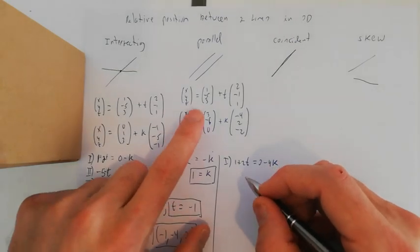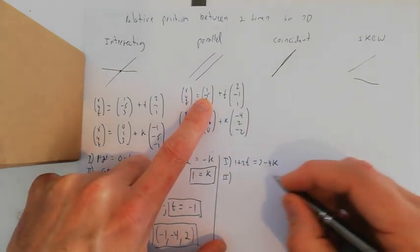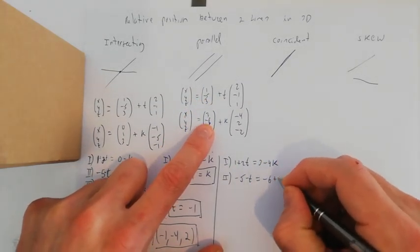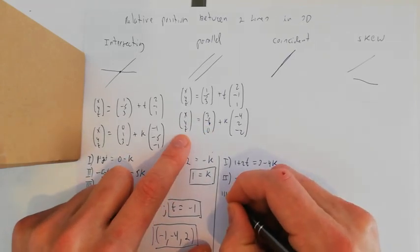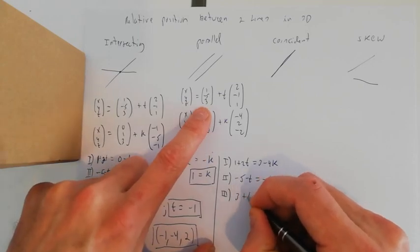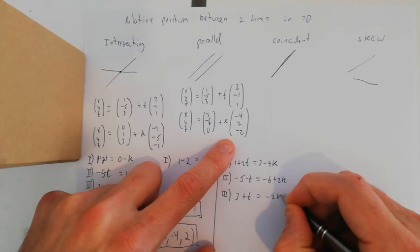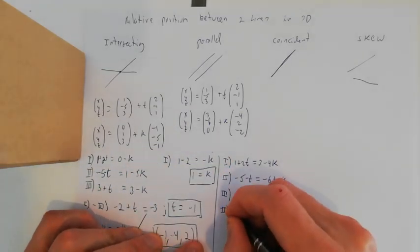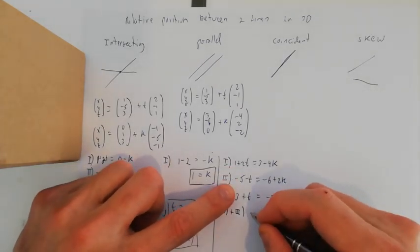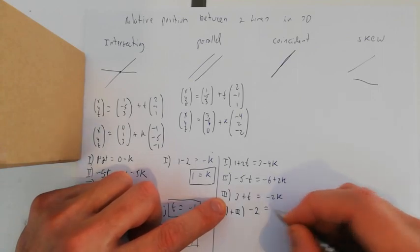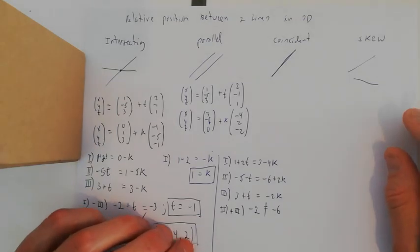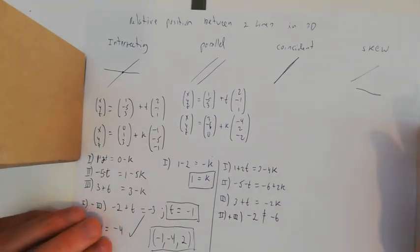Equation 2 is −5 − t = −6 + 2k, and equation 3 is −3 + t = 0 − 2k. Adding equations 2 and 3 eliminates k, and t also cancels, giving −2 on the left and −6 on the right, which is a contradiction.